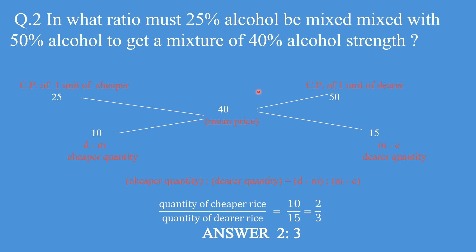The second question states: in what ratio must 25% alcohol be mixed with 50% alcohol to get a mixture of 40% alcohol strength? When we talked about the concept of allegation, we told you that these three items should be in the same unit — if percentage, all three should be in percentage. The cost price of the cheaper commodity is 25% alcohol, the dearer is 50% alcohol, and the mixture mean price is 40.